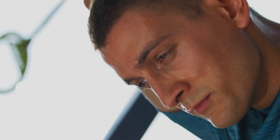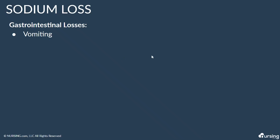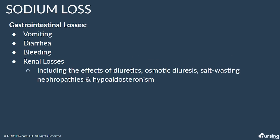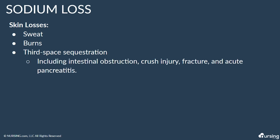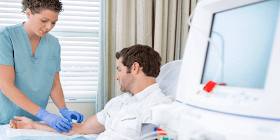Dehydration may occur when fluids containing sodium are lost in the urine, from the GI tract, vomiting, or the skin through sweat and sensible water loss. Examples of gastrointestinal losses include vomiting, diarrhea, and bleeding. Renal losses include the effects of diuretics, osmotic diuresis, salt-wasting nephropathies, and hypoaldosteronism. Skin losses include sweat, burns, and other dermatological conditions. Third-space sequestration causes include intestinal obstruction, crush injury, fracture, and acute pancreatitis.